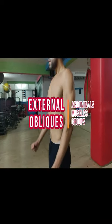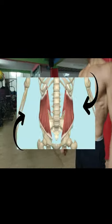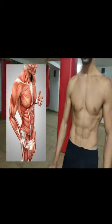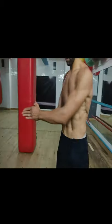External obliques. The external obliques are the muscles on the sides of the upper stomach. They support the torso to twist from side to side.